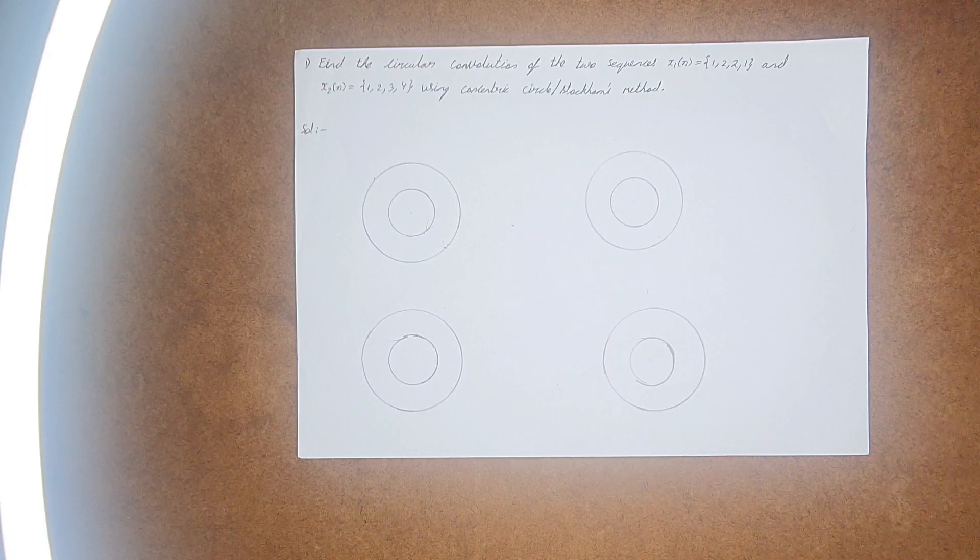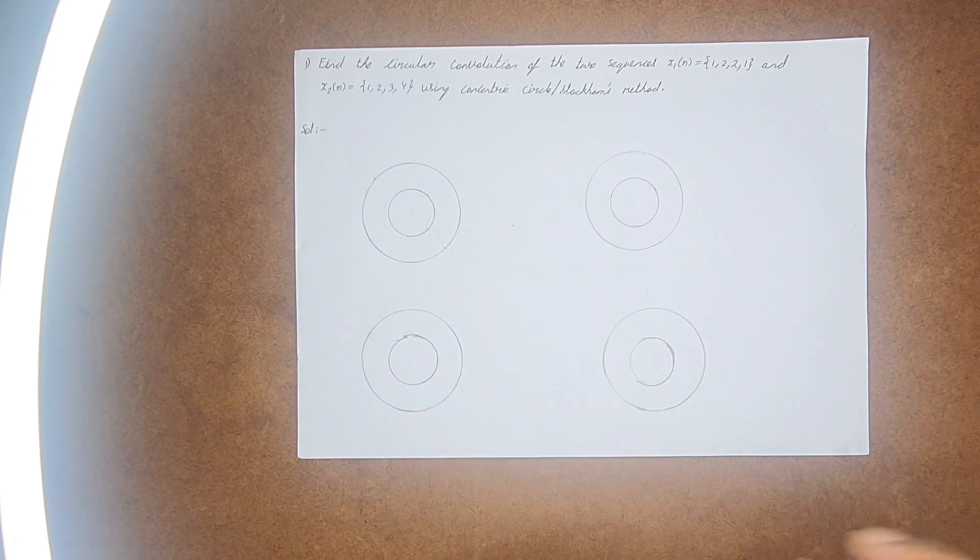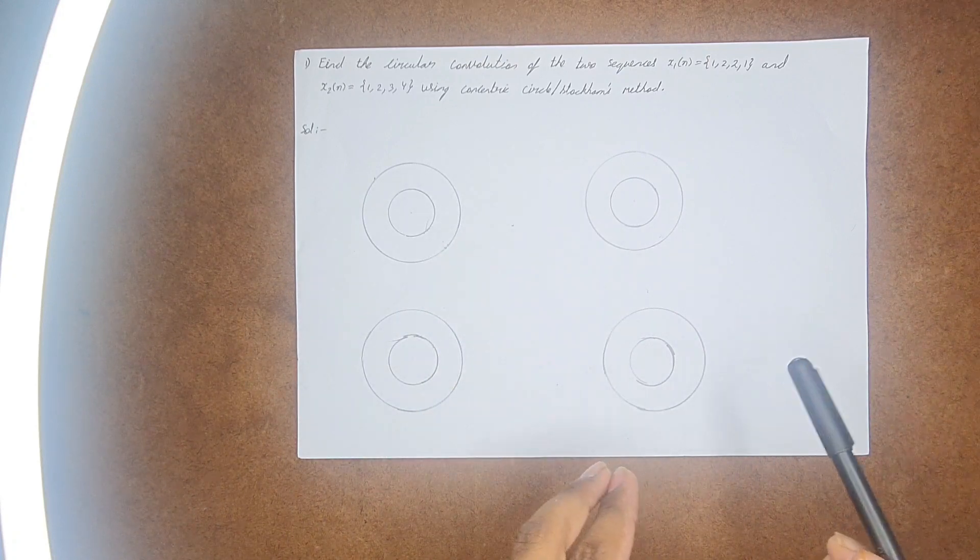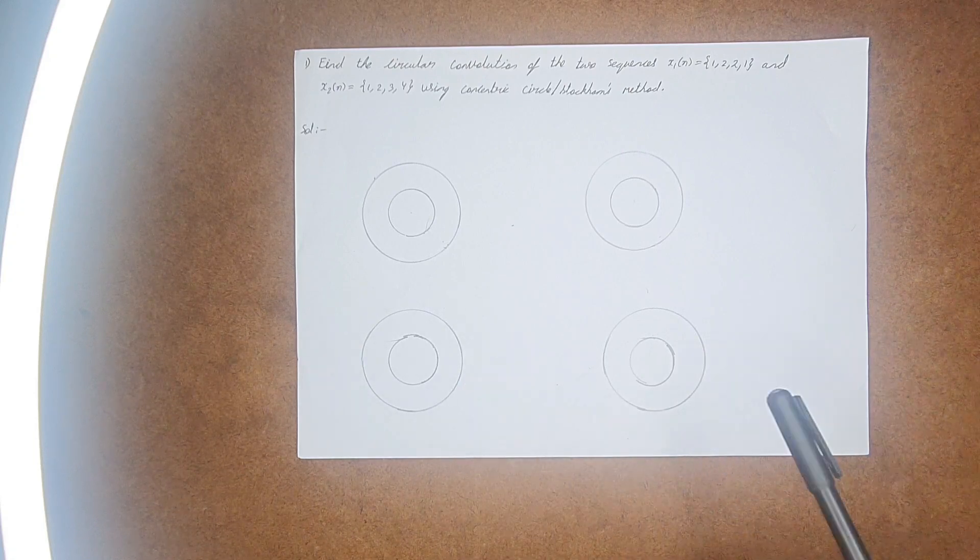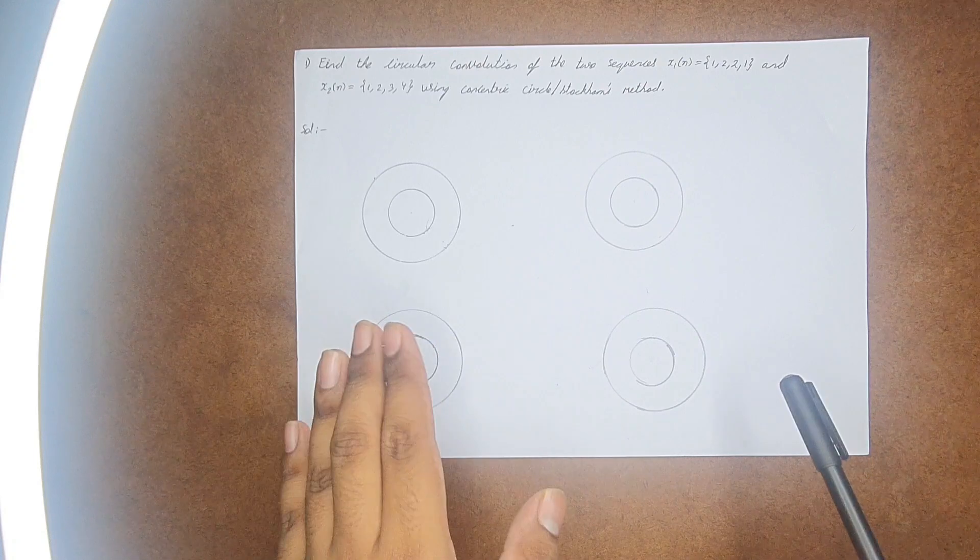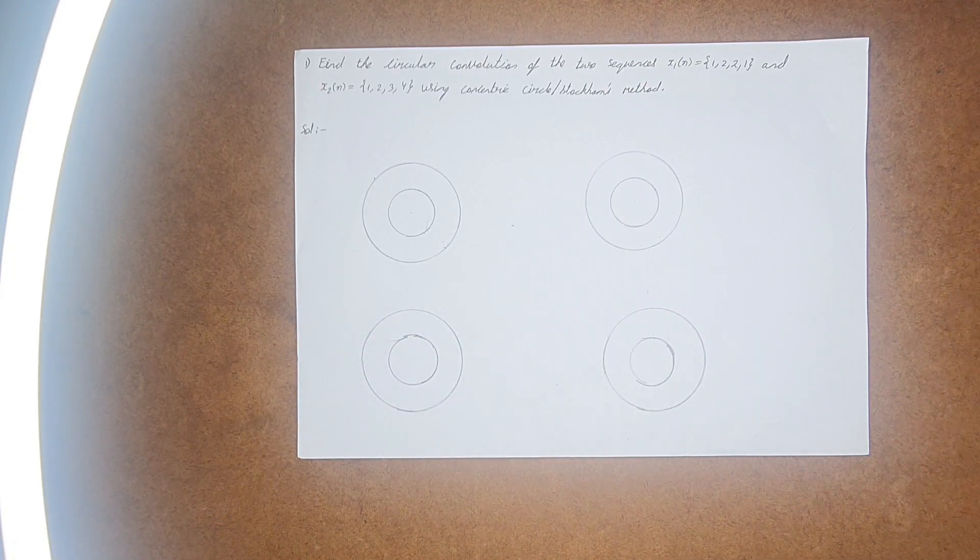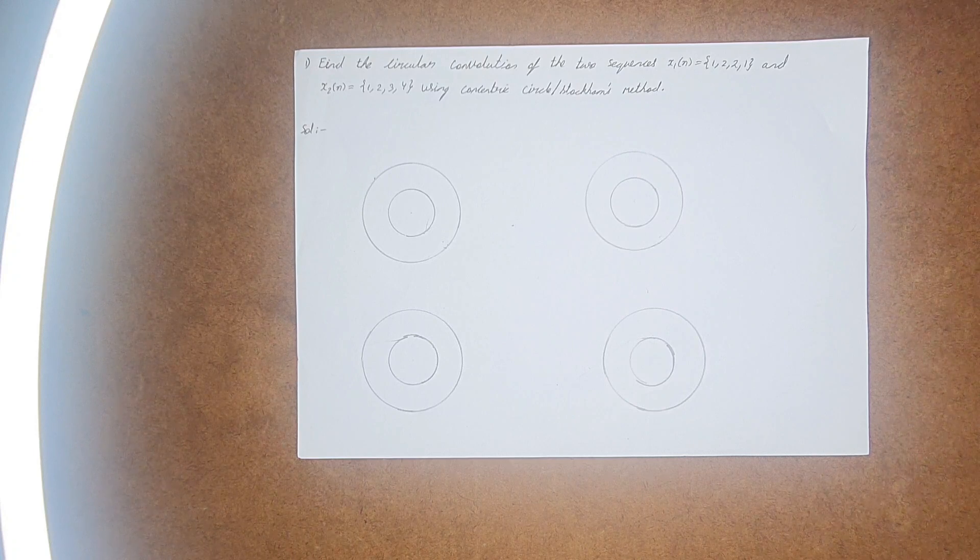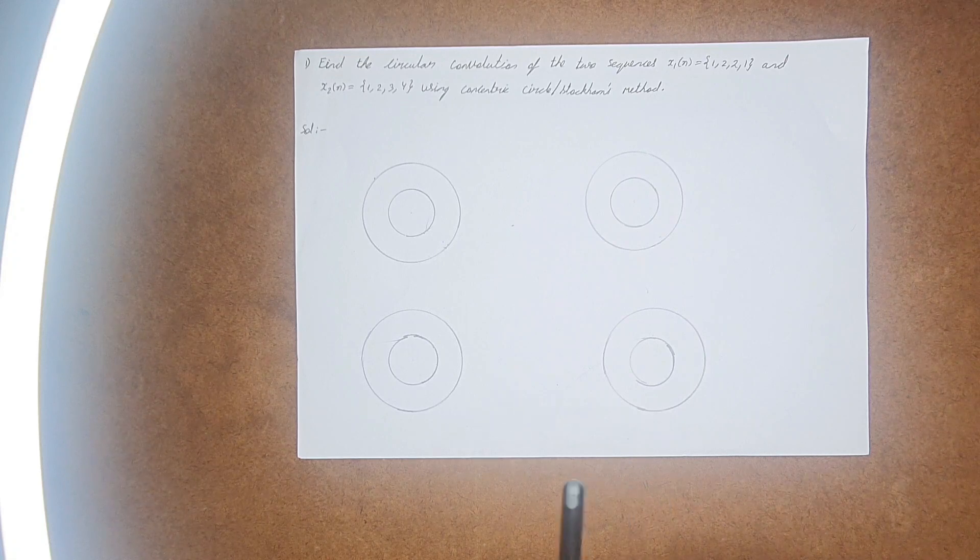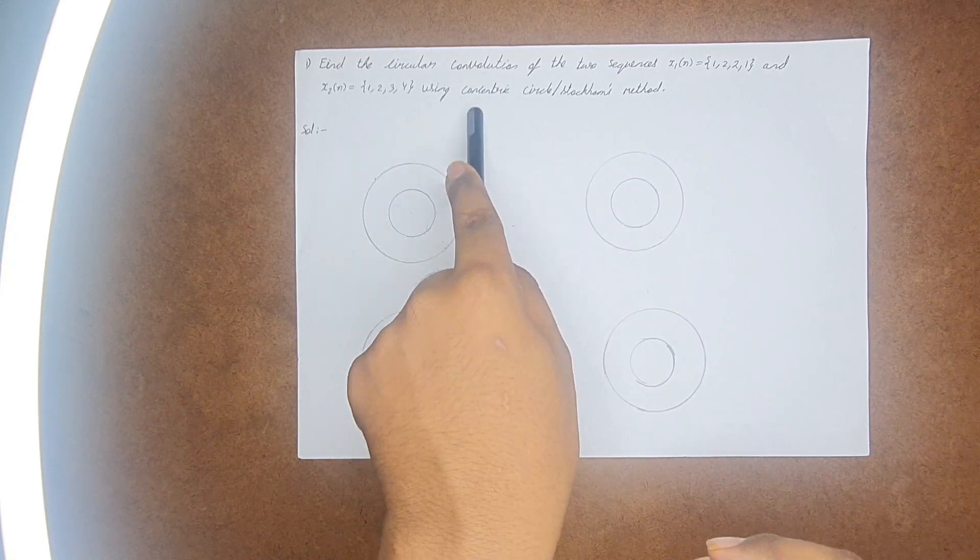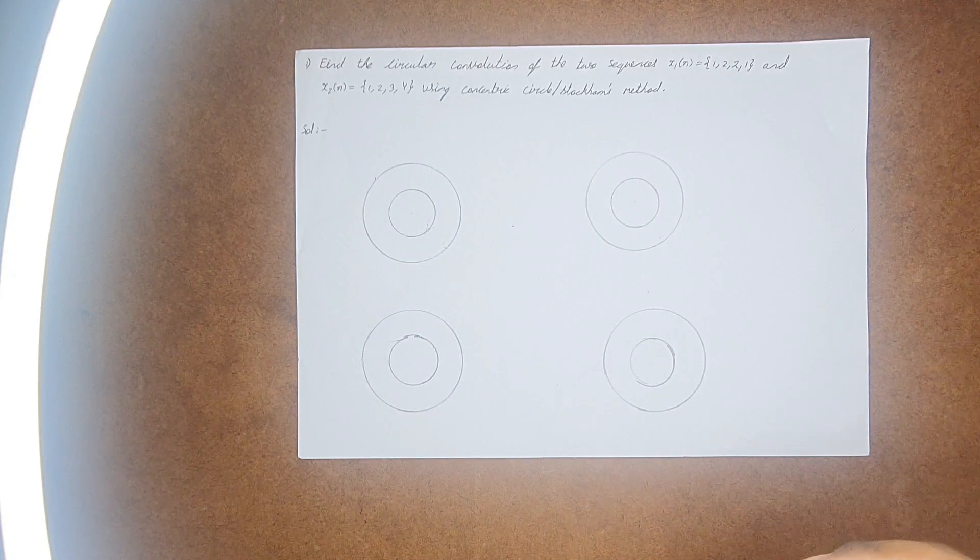So to begin, today I will be explaining about finding the circular convolution using the concentric circular method or the Stock-Hammons method. In almost all the digital signal processing questions, this question is a compulsory question. It can be in any kind of examination.